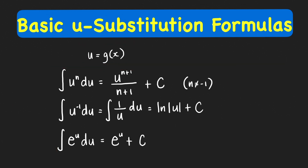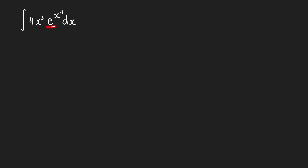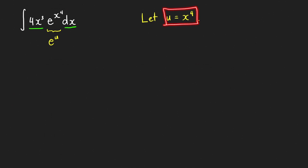Let's have some examples. In this first example, the integrand contains e, so we use the natural exponential rule. The u must equal the power of e, which is x raised to 4. Taking the derivative using Leibniz notation: the derivative of u with respect to x is equal to 4x cubed.